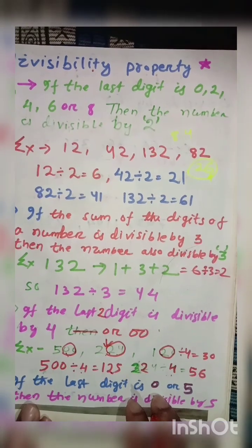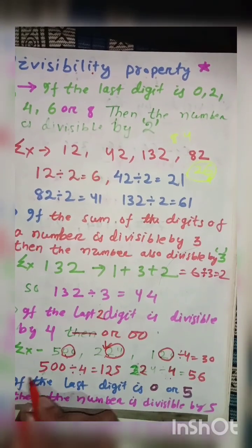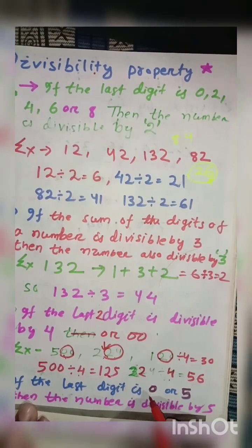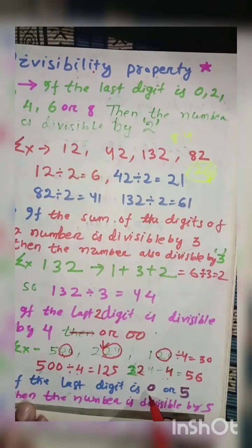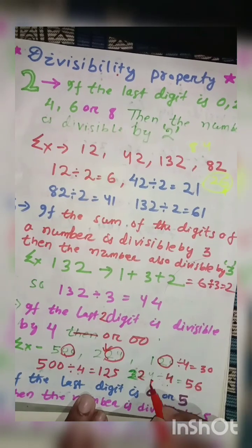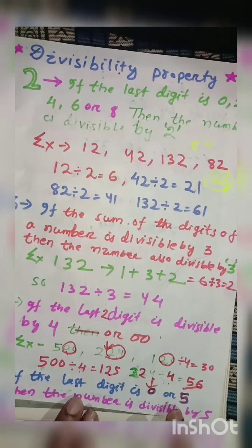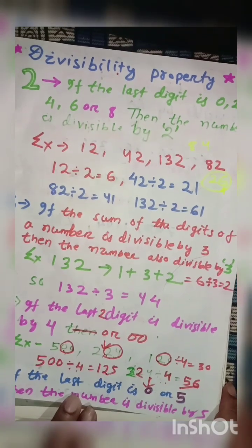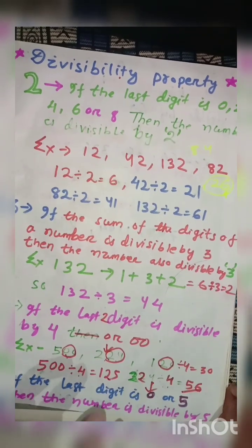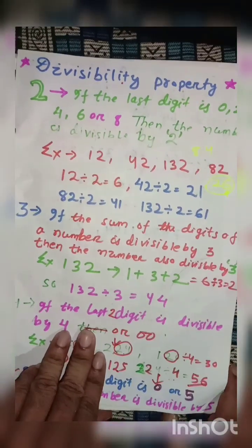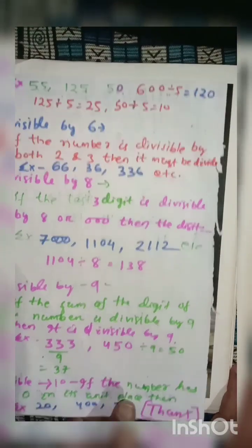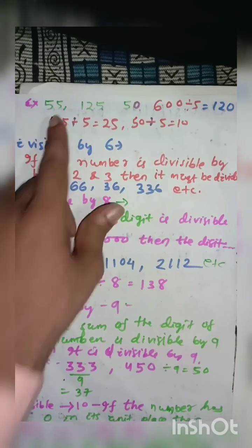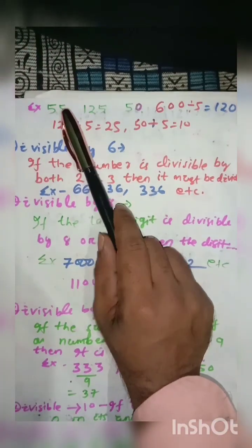The next one is very easy, that is the divisible property of 5. If the last digit or the unit place is either 0 or 5, then the number is undoubtedly divisible by 5. Let's understand with some examples. 55 has 5 in its unit, so it is divisible by 5.